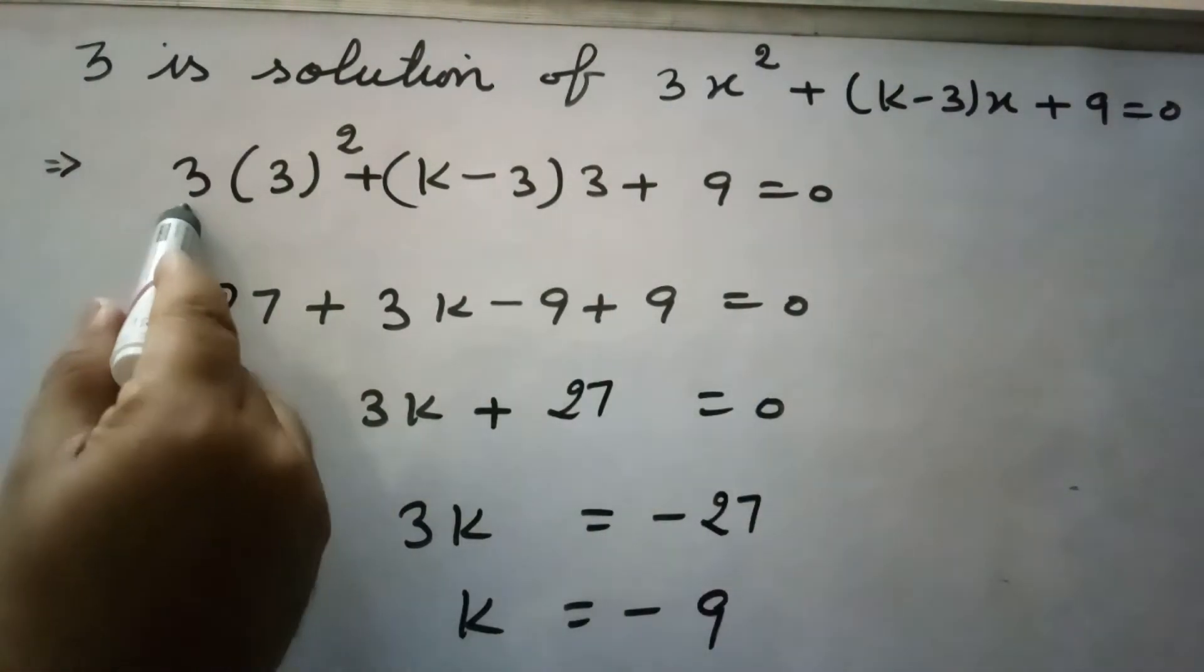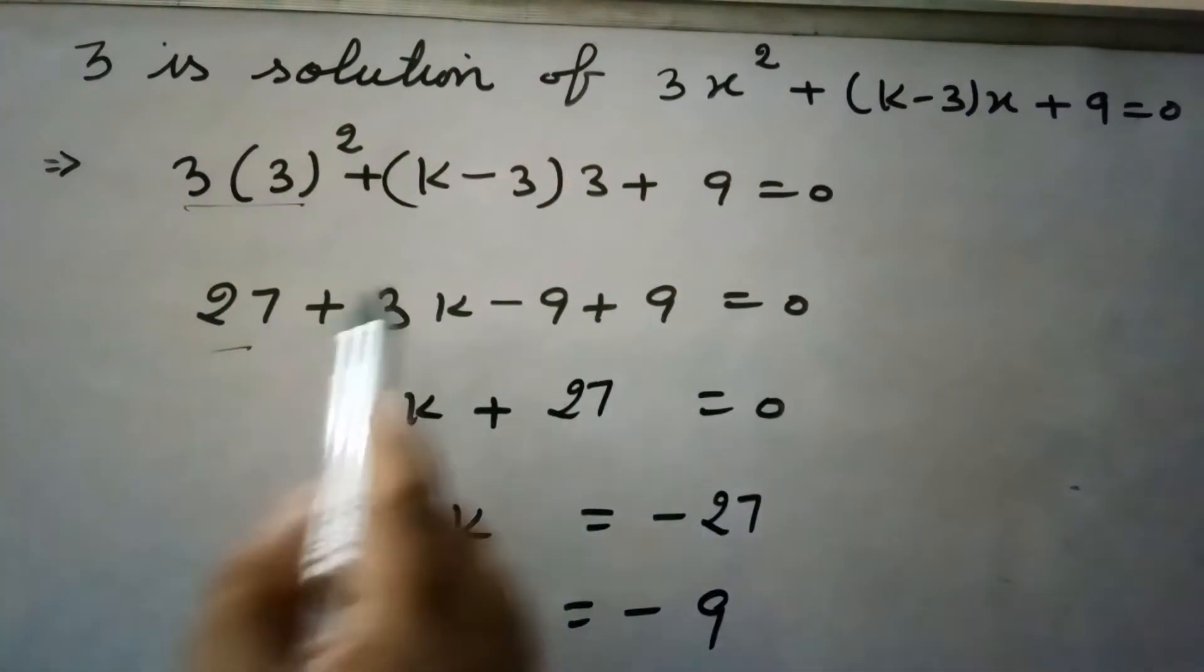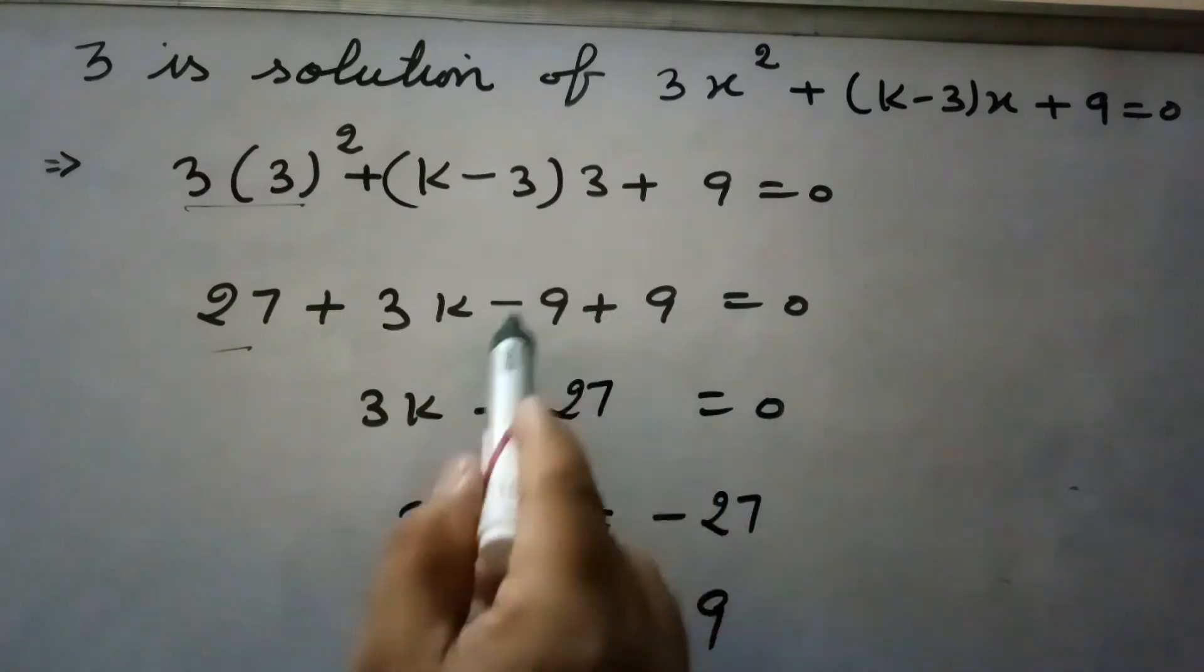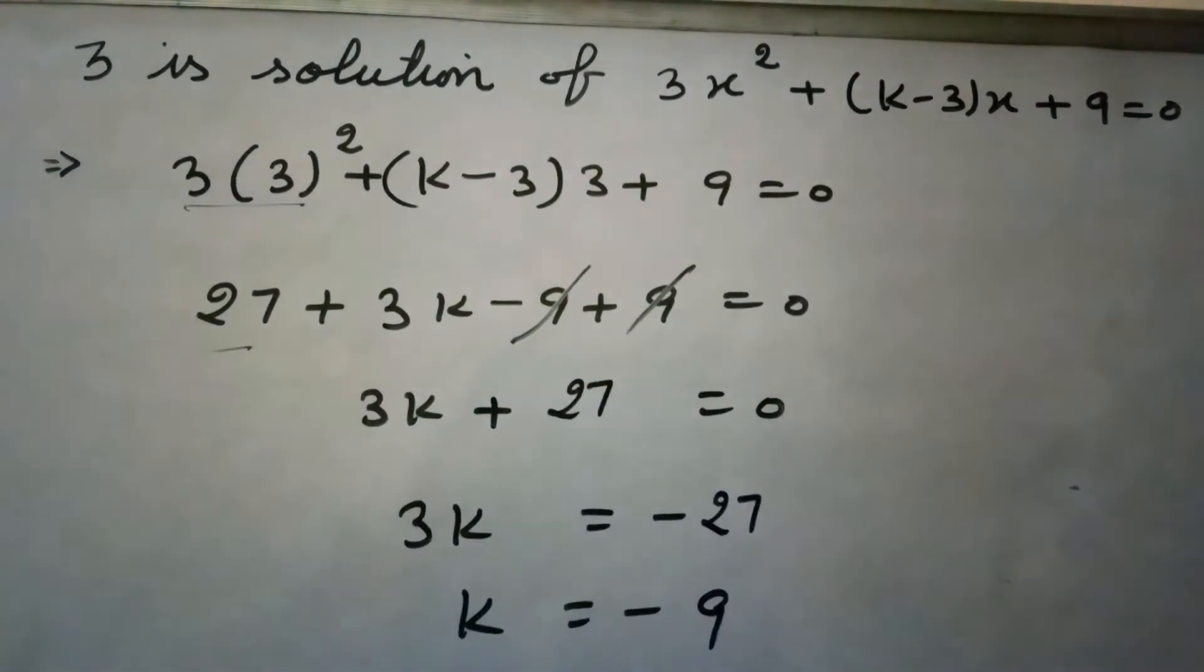So the solution of this is 27, 3k minus 9 plus 9, so minus 9 plus 9 they cancel each other.